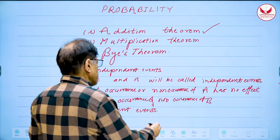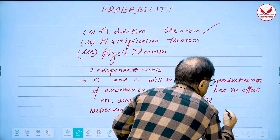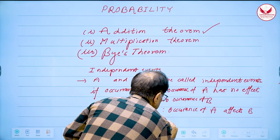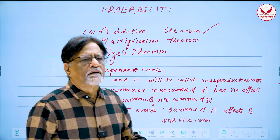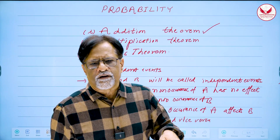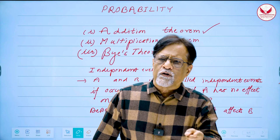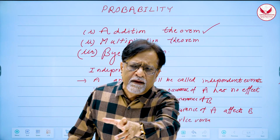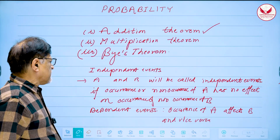Dependent events mean the occurrence of A affects B and vice versa. For example, imagine two machines: one produces 10% defective bulbs and another produces only 5% defective bulbs. The chance that a bulb is defective depends on which machine it came from — these are dependent events. Most of the time our common sense tells us whether events are dependent or independent.